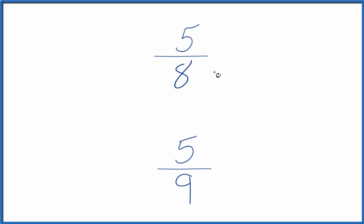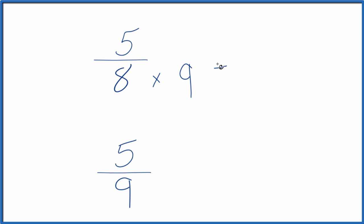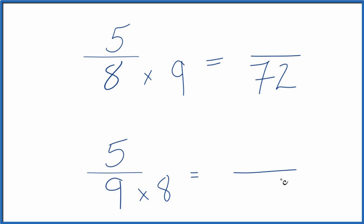Probably the easiest thing to do is just to take 8 and multiply it by 9. Because 8 times 9 is 72. So that's our denominator. Down here we can take 9 and multiply it by 8, and that gives us 72. So now we have the same denominator.